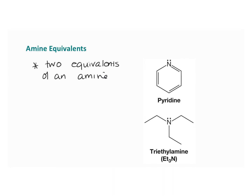If the amine is readily available and pretty cheap, it's acceptable to carry out this reaction by just adding two equivalents of the amine — instead of using one mole, maybe use two moles. But if the amine is difficult to obtain or expensive, then only one equivalent is used, and another amine such as pyridine or triethylamine is added to the reaction mixture to act as the base, freeing up the desired amine to act as the nucleophile.